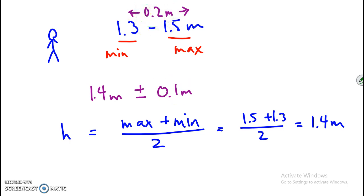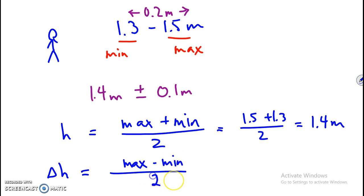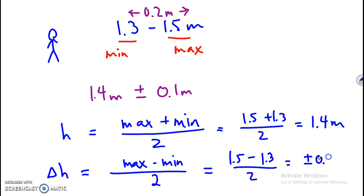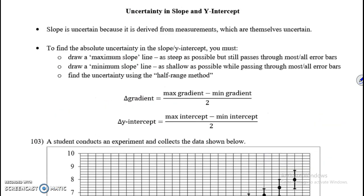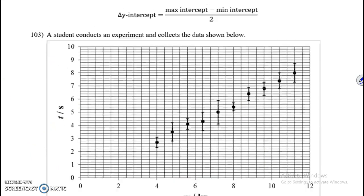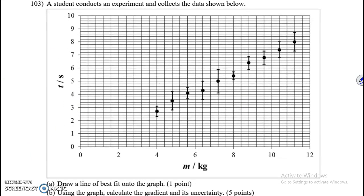Mathematically, the uncertainty in height equals the difference between the max and min divided by 2. If we put that into practice we get plus or minus 0.1 meters. These equations apply not only to this scenario but also to the slope and y-intercept. So here's an example: a student conducts an experiment and collects the data shown below.